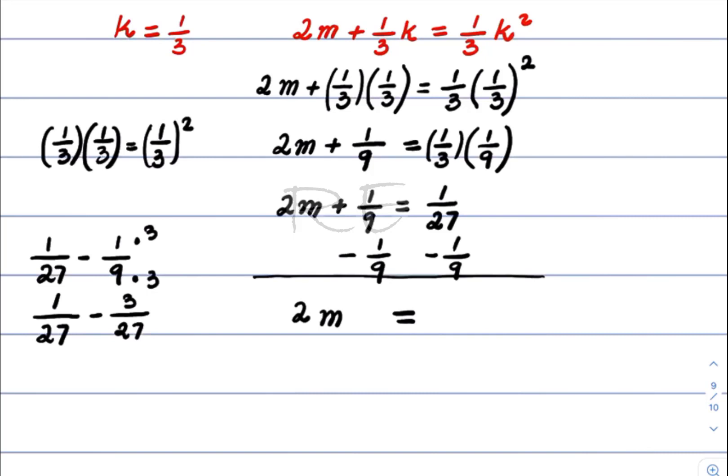We multiply one by three also, and one-twenty-seventh doesn't change. One minus three is negative two, so our answer is negative two over twenty-seven.